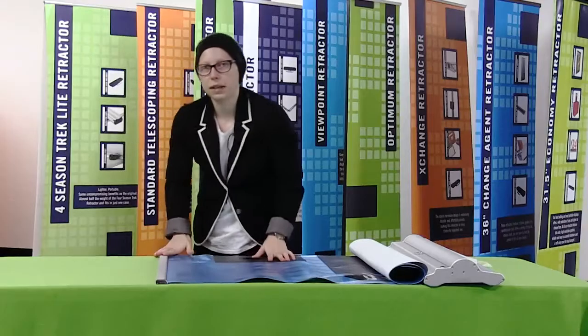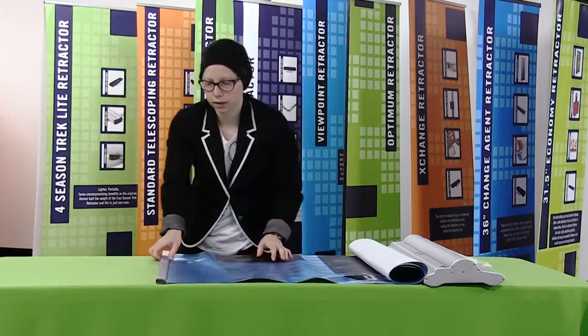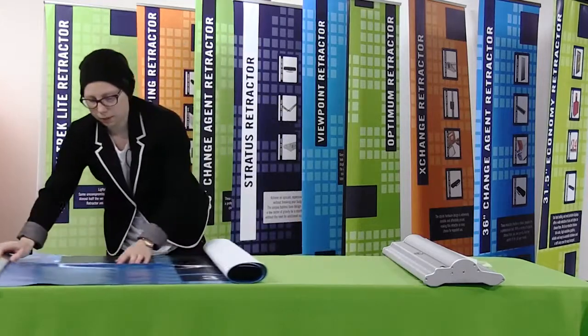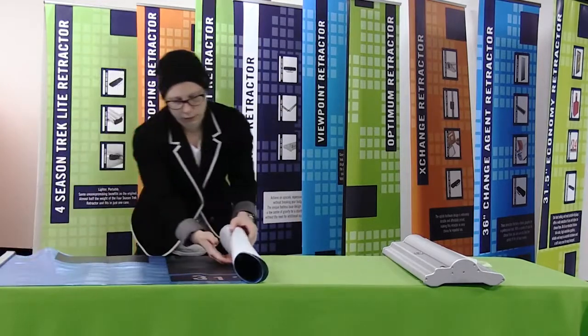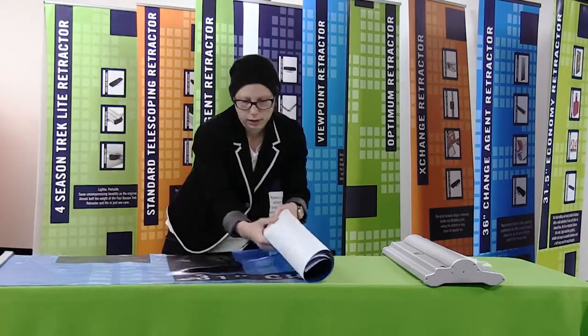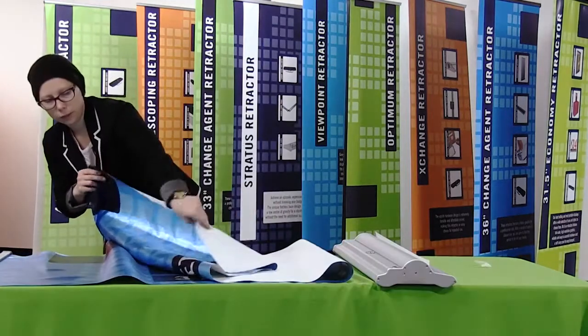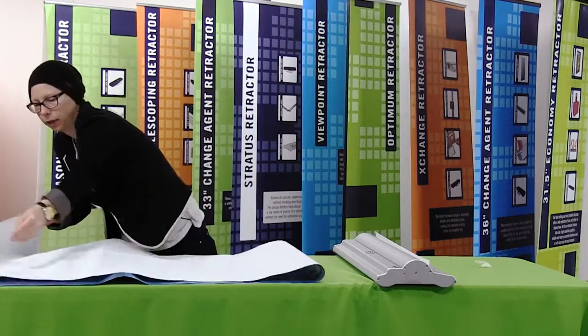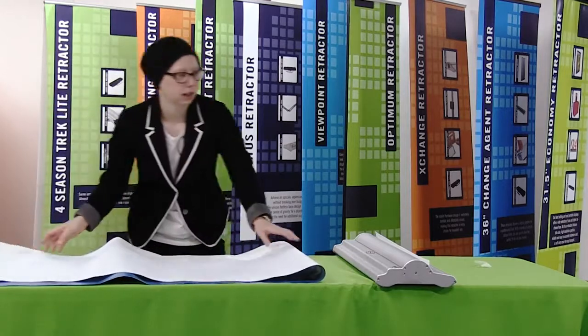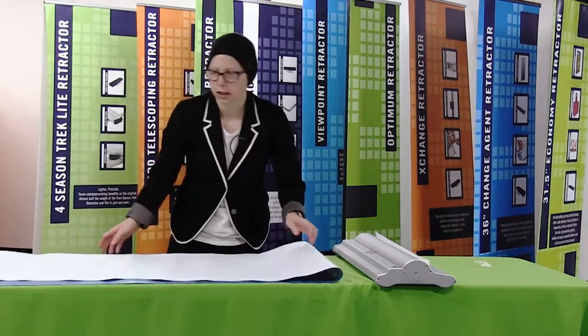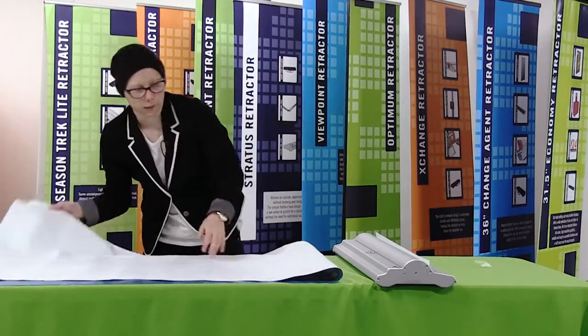Now that I have my top rail secure, I'm just going to lay out my graphic, and using the hook and loop strip on the bottom of my graphic, I'm going to connect it to the leader on the retractor base.